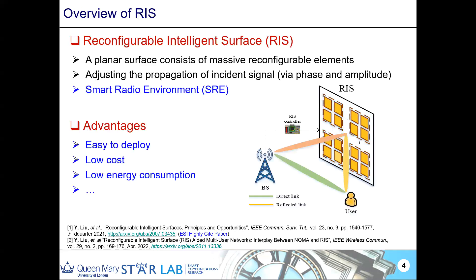Let's start with RIS — Reconfigurable Intelligent Surface — which most of us understand. It's a planar surface consisting of massive reconfigurable elements. With the RIS controller, we can adjust the propagation of incident signals via phase and amplitude to achieve a smart radio electromagnetic environment. Its advantages include easy deployment, low cost, and low energy consumption.